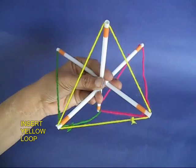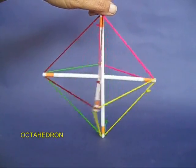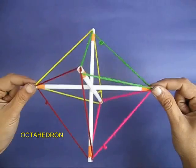Then insert the red loop, then the yellow, and finally the magenta. This completes the octahedron.